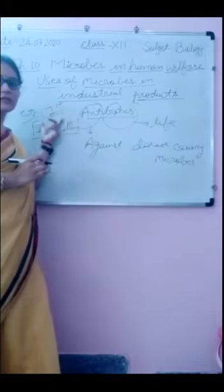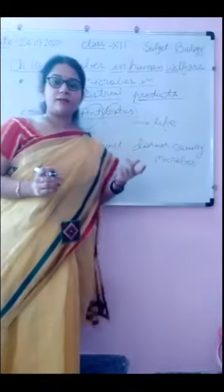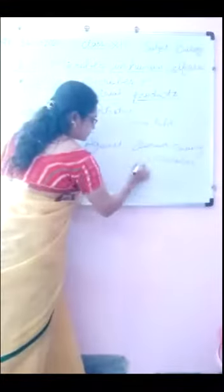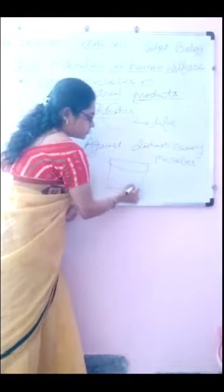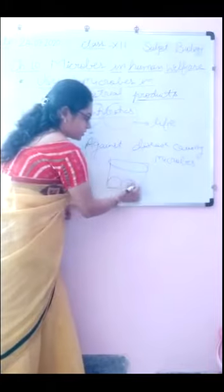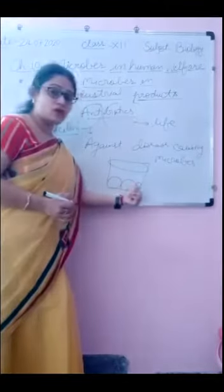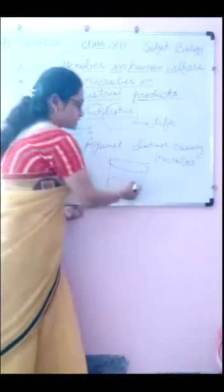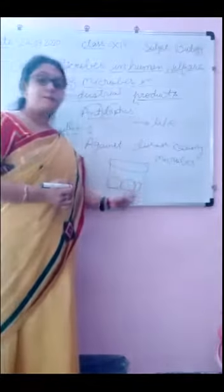Penicillin was the first antibiotic, discovered by chance by Alexander Fleming. When Alexander Fleming was working on Staphylococci bacteria, he observed on the culture plate that some Staphylococci bacteria were killed because a mold had grown around them. He observed that this mold produced some chemicals, and these chemicals are called antibiotics. Penicillin is obtained from this mold, Penicillium notatum.